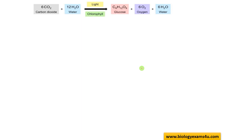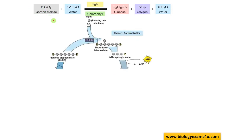In photosynthesis, carbon dioxide combines with water to form glucose with release of oxygen. Oxygen is a result of photolysis of water. Carbon dioxide enters the Calvin cycle and combines with RuBP, which is the primary carbon dioxide acceptor, forming a short-lived intermediate. The first stable product in the C3 cycle or Calvin cycle is 3-phosphoglycerate — that is, 3-phosphoglyceric acid.